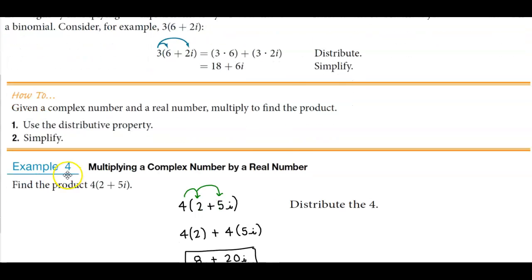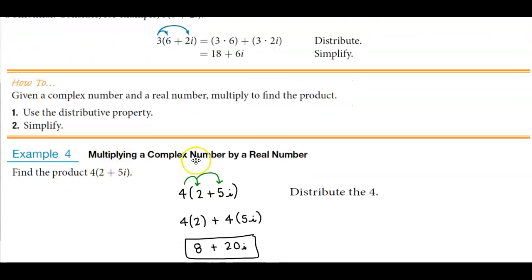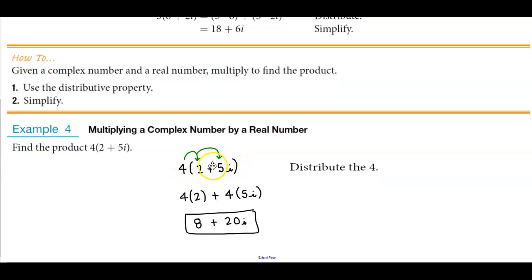So for example number 4, we're multiplying a complex number by a real number to find the product. We're going to find the product of 4 times (2 + 5i). We're going to distribute the 4 to both of those terms.